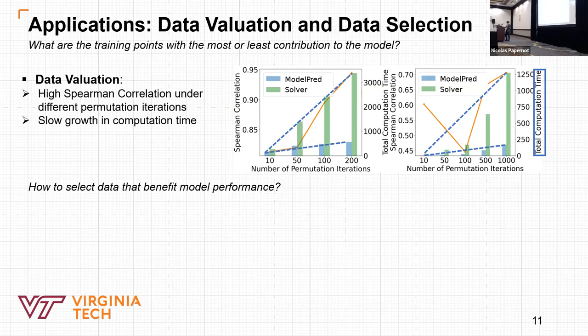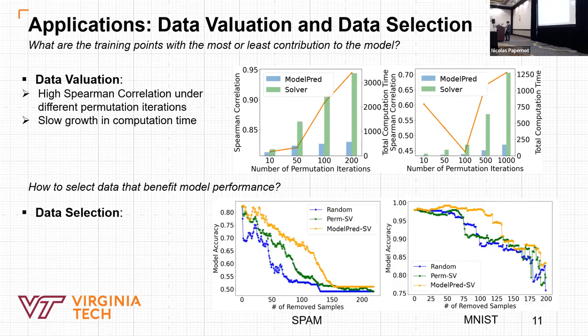Based on the Shapley value estimated by Model Parade, we can use it to identify low quality data in the dataset. Here we show results of model prediction performance after removing samples ordered by the Shapley value from smallest to largest with different approaches. These approaches are conducted within the same computation time. We can see that Model Parade maintains higher testing accuracy than other methods. It means it can estimate the Shapley value more accurately with a large number of permutations within the same computation time.